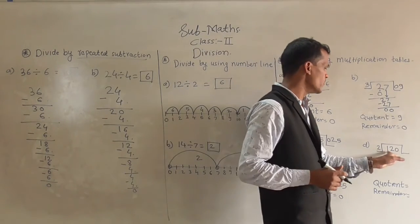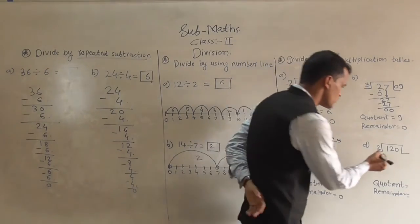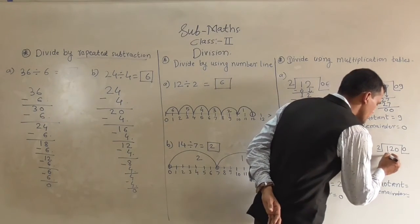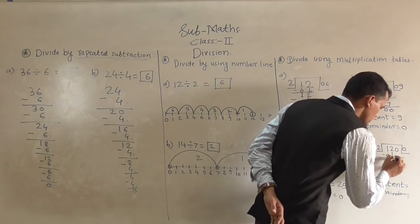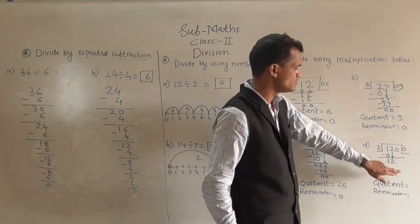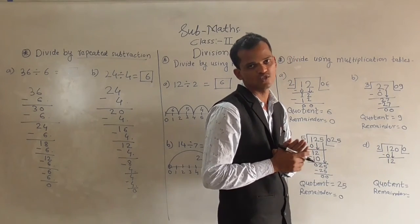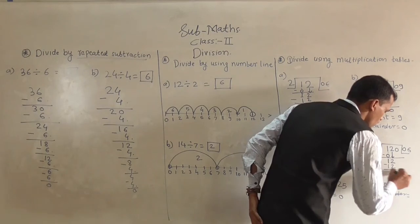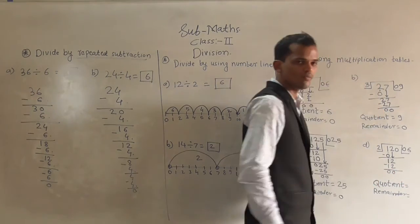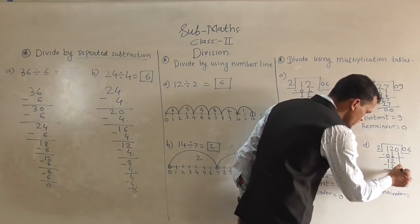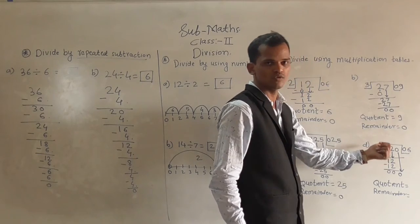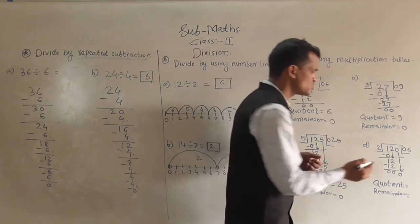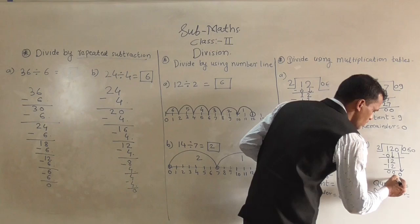Next example: 120 divided by 2. The first digit 1 is not divisible by 2, so write 0 and subtract 0 from 1: 1 remains. Bring down 2 to form 12. 12 comes in the table of 2: 2 sixes are 12, so write 6 and subtract 12 from 12 to get 0. Bring down 0. Now 0 divided by any number gives 0, so write 0 in the quotient and subtract 0 from 0: 0 minus 0 is 0.